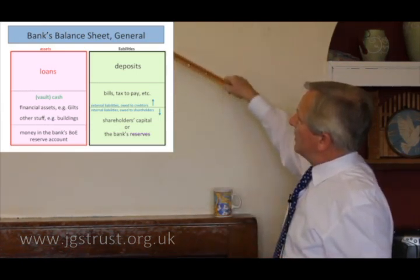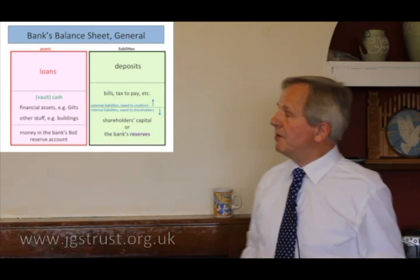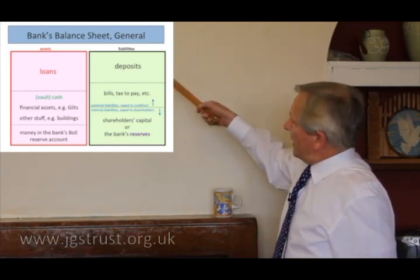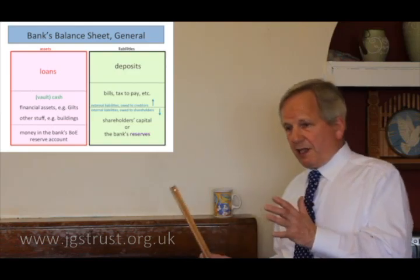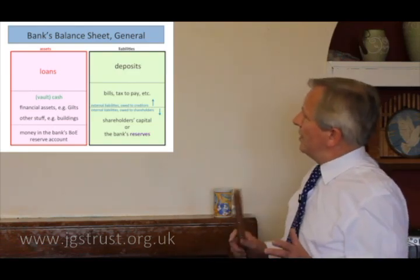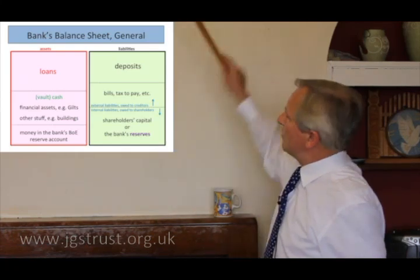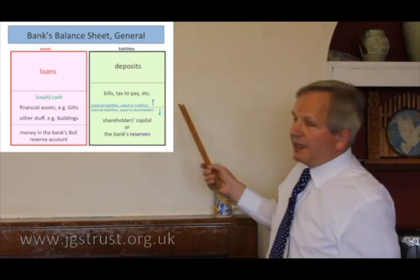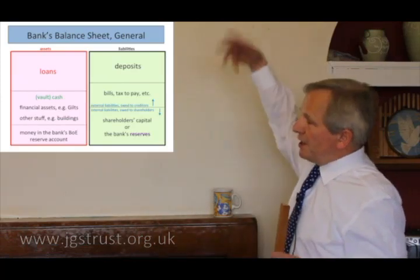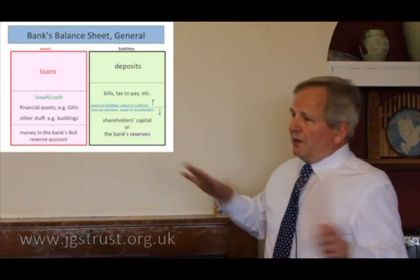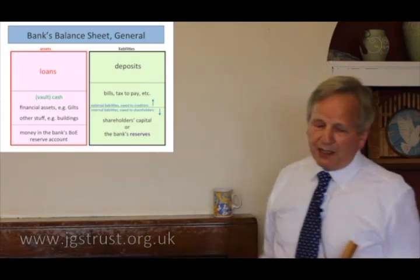Other liabilities that banks have: they have all the usual expenses of any business — they owe tax, they have to pay electricity bills, etc. But unlike any business, they have a shareholder's capital account, which is a number on the liability side of their balance sheet. It represents what the shareholders would get were the bank to be wound up now. The bank would call in all its assets, pay off all its liabilities, and with any luck there'd be something left over for the shareholders to take away.